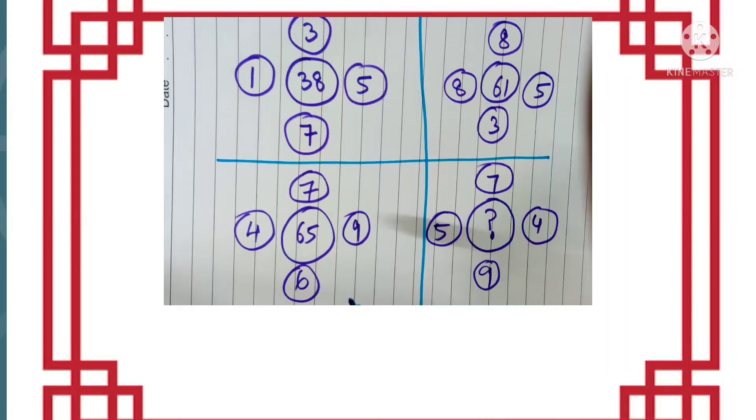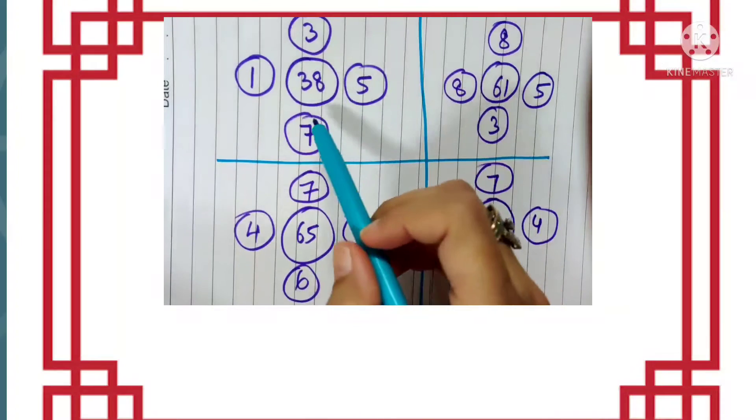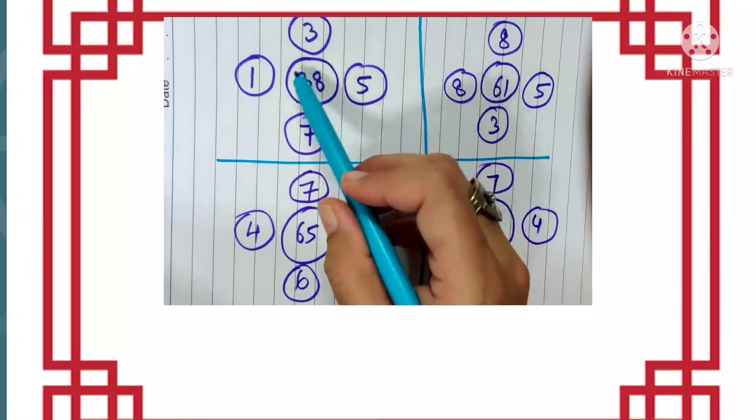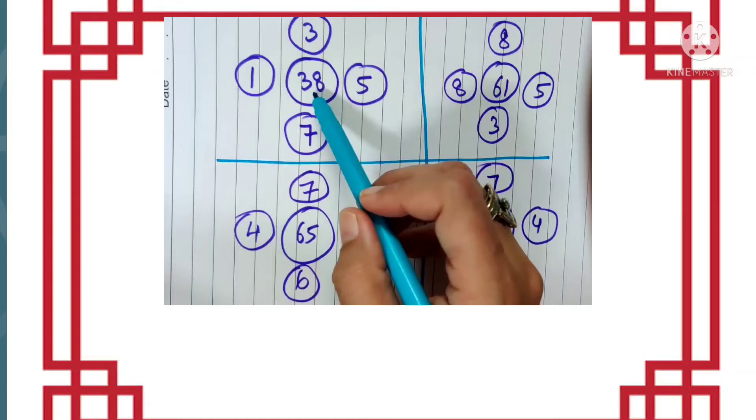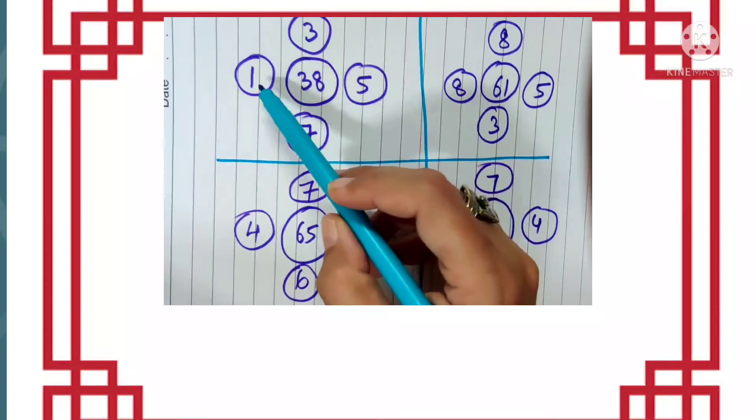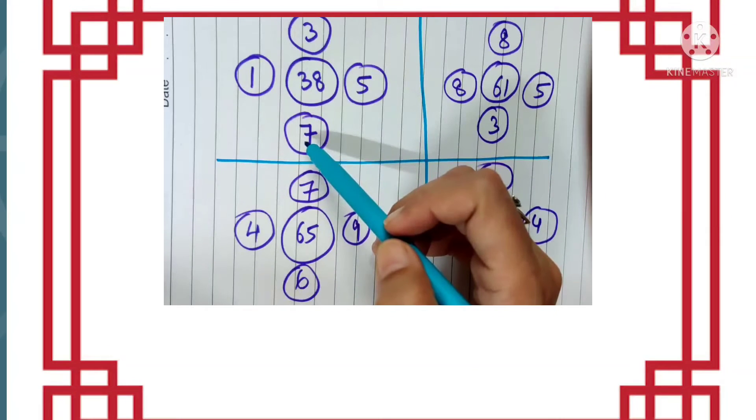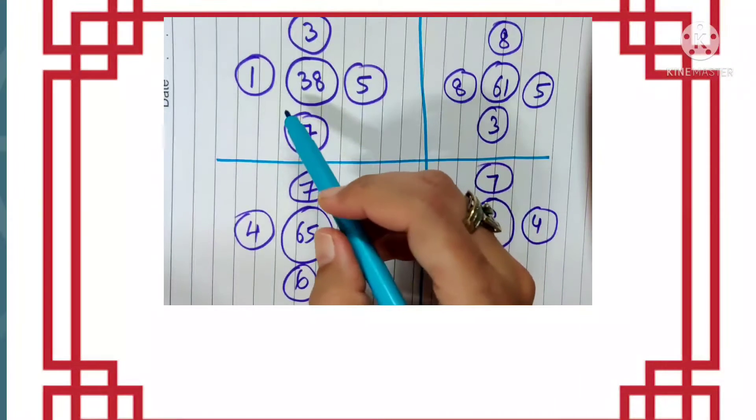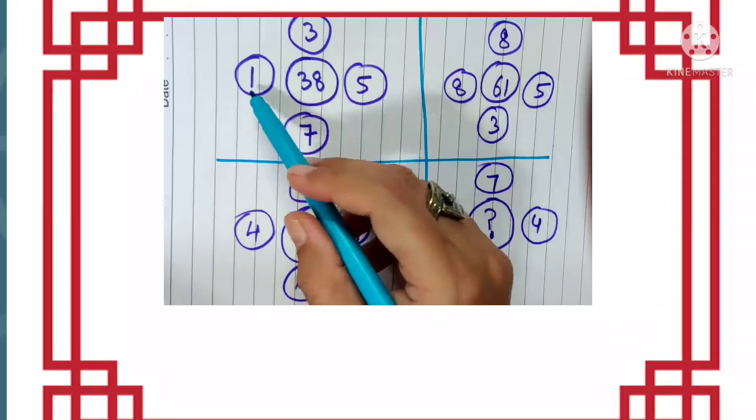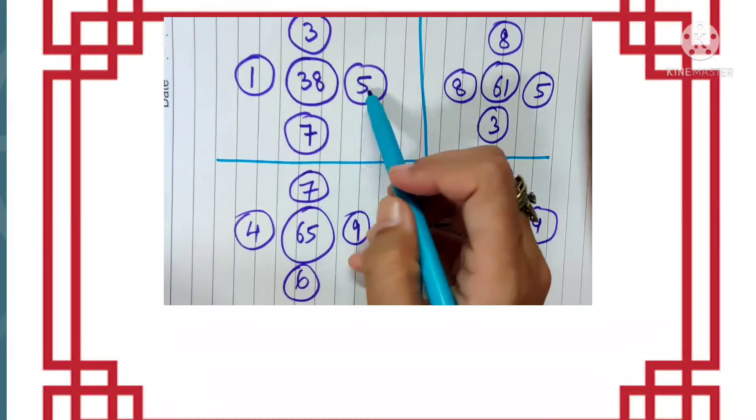I hope you are trying. Okay, let us see what is the pattern. So here if you observe the first block where the central number is 38, we need to see how we get this 38 using the digits 1, 3, 5, and 7. The pattern is we find the sum of the digits which are placed in the horizontal, that is 1 and 5.